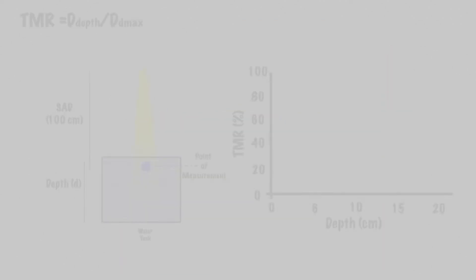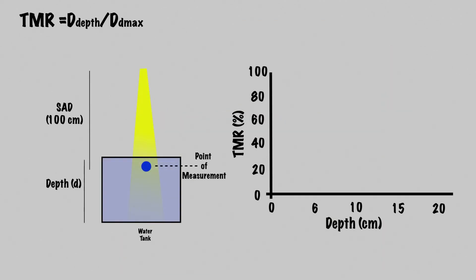TMR is the ratio of the dose at a given point, or depth, in a phantom to the depth of maximum dose, dmax. These values are calculated by physicists for each machine and beam energy, which can be found in your clinic's lookup tables. Sounds familiar, right?